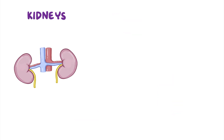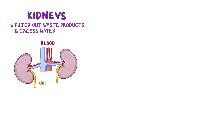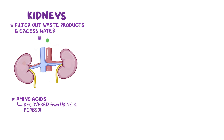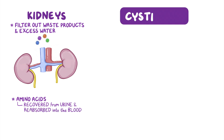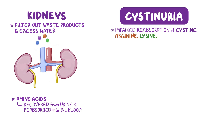The kidneys are two bean-shaped organs in the body that filter out waste products and excess water from blood to produce urine. Typically, amino acids are recovered from urine and reabsorbed into the blood by the kidneys. But in cystinuria, impaired reabsorption of cysteine, arginine, lysine, and ornithine leads to excessive amounts in urine.